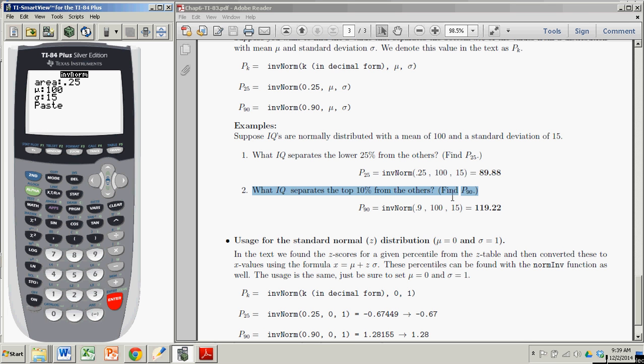The area to the left is 0.9 now. The mean is still 100, the standard deviation is still 15. I'm going to highlight paste and hit Enter. Now it's stuck the input into my function, inverse norm, and all I have to do is hit Enter. And I get 119.22.